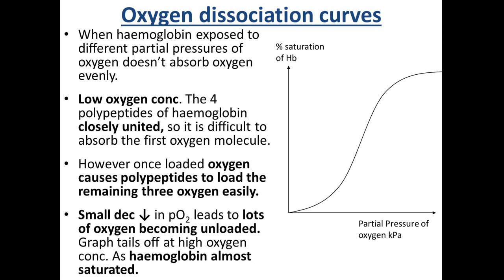Oxygen dissociation curves always have a sigmoidal, S-shaped curve. The reason is that, as mentioned last lesson, there are four heme groups which can each carry an oxygen molecule, so a hemoglobin molecule can carry four oxygens. When the first oxygen binds, the hemoglobin is quite tightly wound — the polypeptides are in a closely united format — so it's really difficult to get that first oxygen molecule to bind.